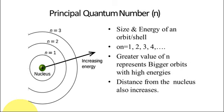A greater value of n represents bigger orbitals or greater energy — high energy. As the number n increases from 1, 2, 3, 4, the distance from the nucleus increases. So the principal quantum number mainly explains the size and energy of an orbital shell. As n increases, the distance of the electron from the nucleus increases, and greater the value of n, greater or higher is the energy of the electron.